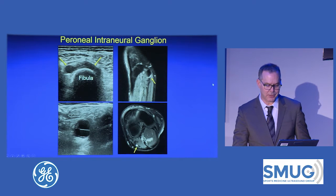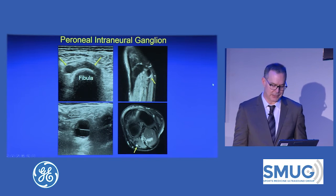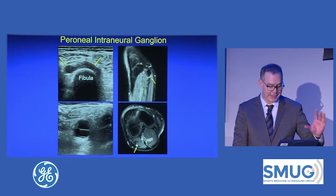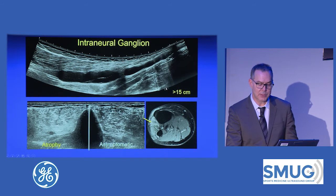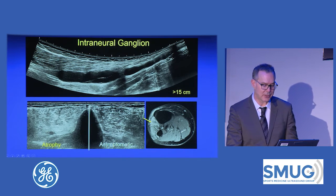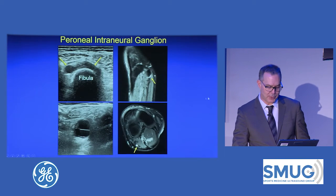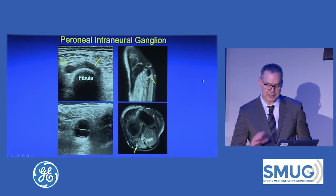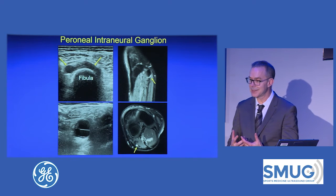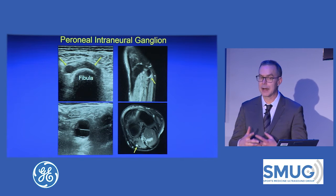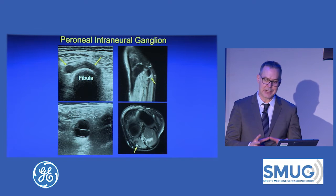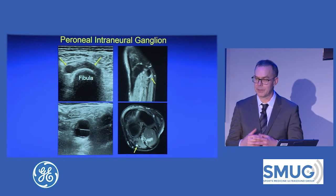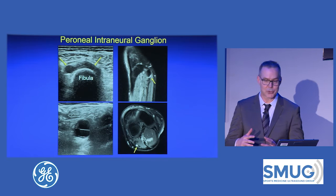The resolution of ultrasound is helpful. Here's the multilocular fluid compressing the common peroneal nerve. They can be quite large — this one was over 15 centimeters and went up into the sciatic nerve. Note the multilocular appearance. It's important not to mistake these for a tibiofibular joint cyst, which is very common. To make the distinction: for an intraneural ganglion cyst, it should track along the nerve, whereas a tibiofibular joint cyst won't track along the nerve.